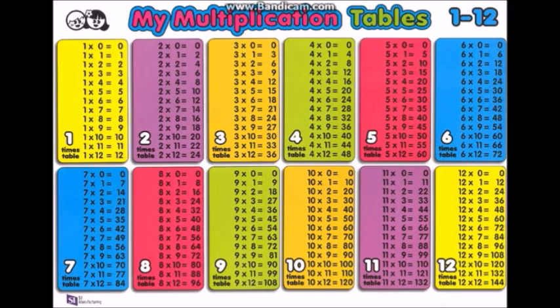3 x 0 is 0, 3 x 1 is 3, 3 x 2 is 6, 3 x 3 is 9, 3 x 4 is 12, 3 x 5 is 15, 3 x 6 is 18, 3 x 7 is 21, 3 x 8 is 24, 3 x 9 is 27, 3 x 10 is 30, 3 x 11 is 33, 3 x 12 is 36.